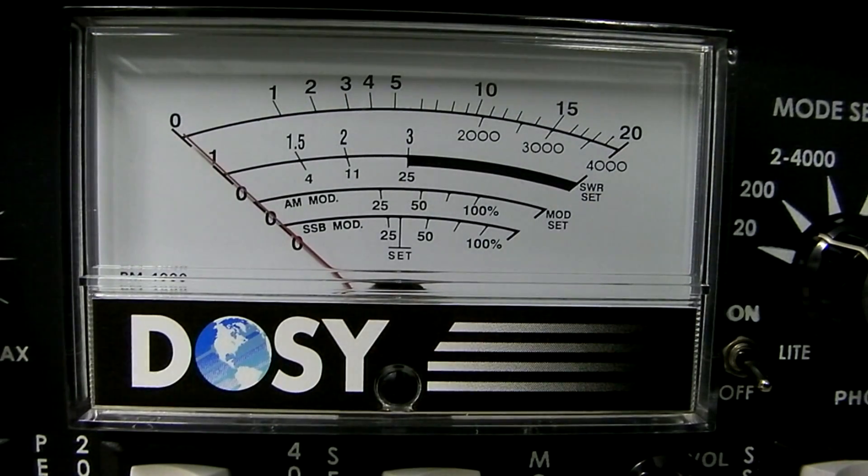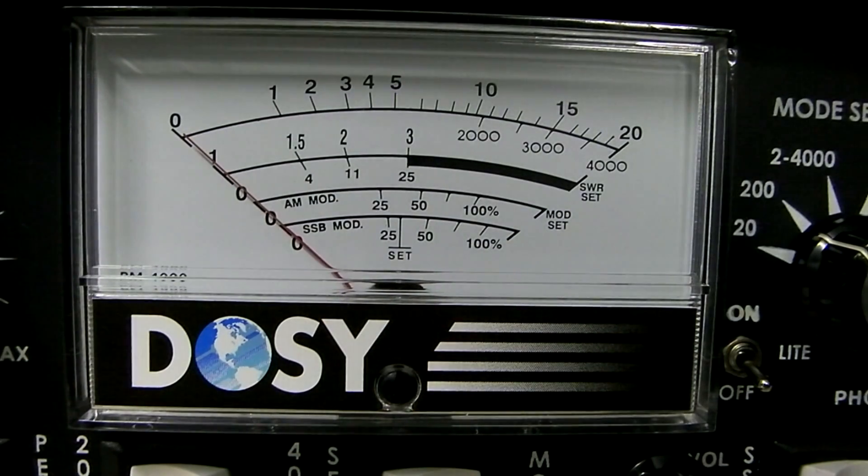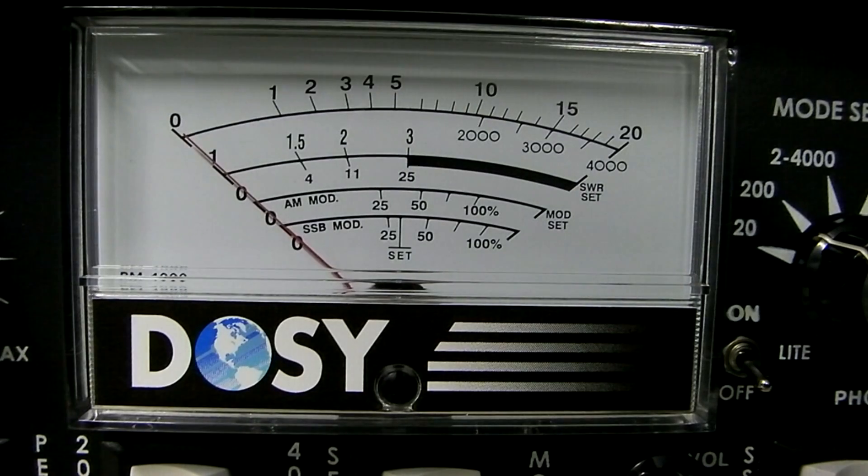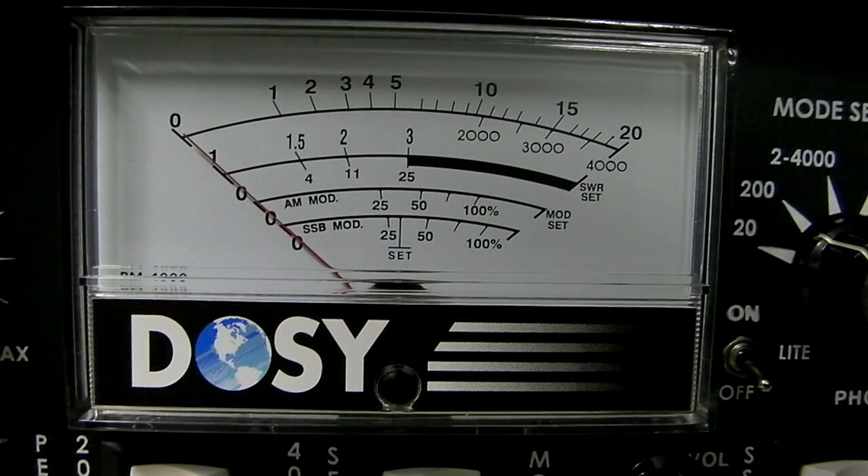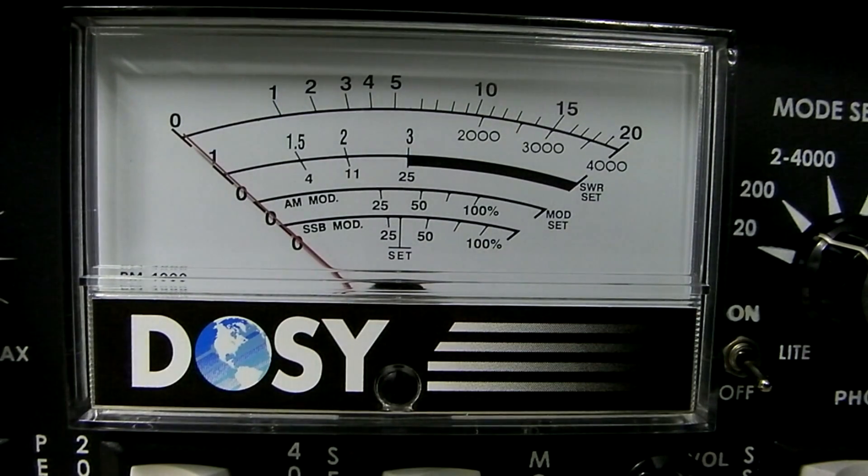So, in terms of peak reading, on single sideband, this meter is showing about 115 watts. The Radio Shack is showing 110, 120, somewhere in that range. It's a little difficult to tell on the small meter. And our active peak reading meter, the PALSTAR, is showing about 110 watts.